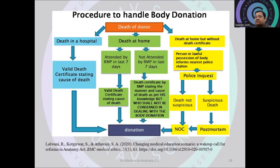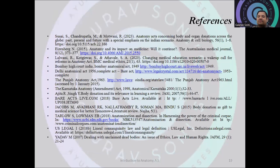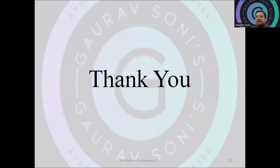If death occurs at home with no death certificate, a legal process begins with a police inquiry. If something suspicious is found, a post-mortem is conducted, and after the post-mortem an NOC can be provided for body donation. If nothing suspicious is found, an NOC can be provided directly for body donation. These are the systems according to which a body can be donated to an institute. I hope the important points of the Anatomy Act and how we can benefit from it are now clear to all of you.